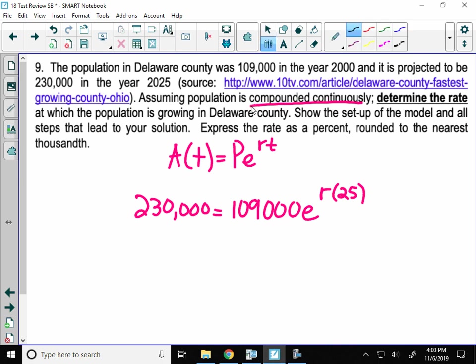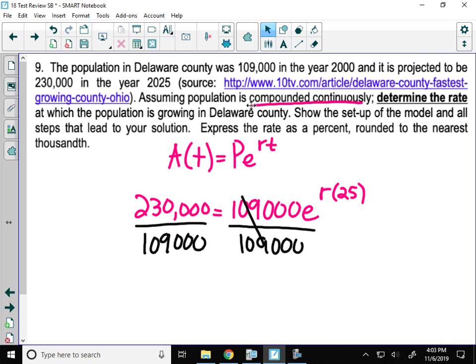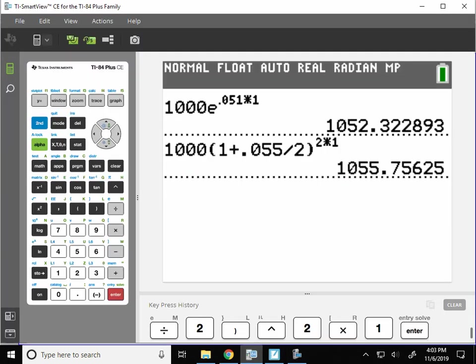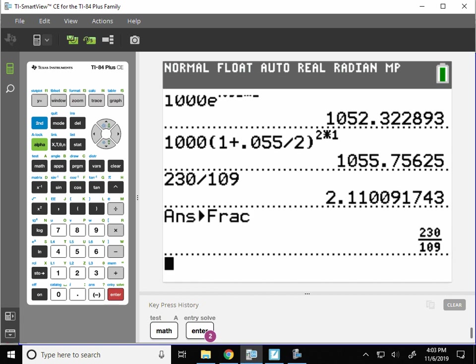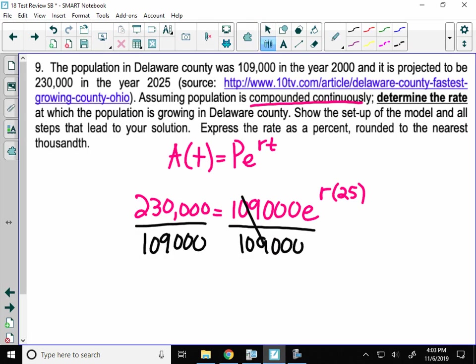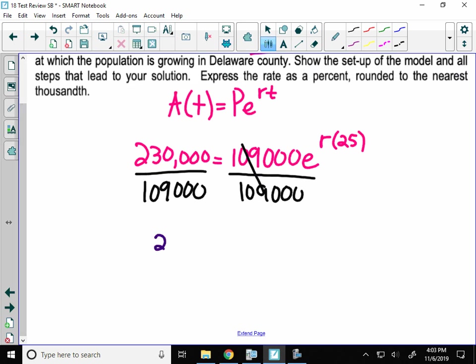Now, what we have to do is solve for R. I'm going to start by dividing by 109,000. And let's see, what's 230,000 divided by 109? I'm just going to do 230 here. And that's not a pretty nice number, so let's turn that into a fraction. Oh, we've got to leave it as 230 over 109. Okay. All right, this is 230 over 109 equals E to the, I'm going to change that to 25R.